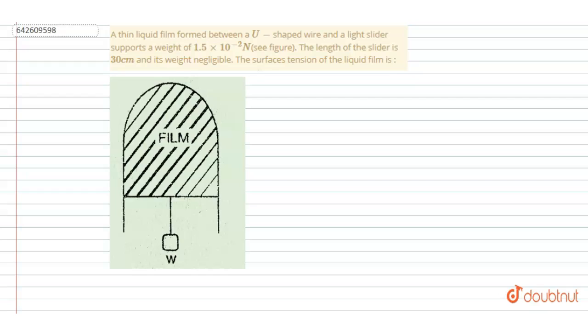is formed between a U-shaped wire. As you can see in the figure, a lighter slide supports a weight of 1.5 × 10^-2 Newton. The length of the slider is 30 centimeters and the slider's weight is negligible. Find the surface tension.